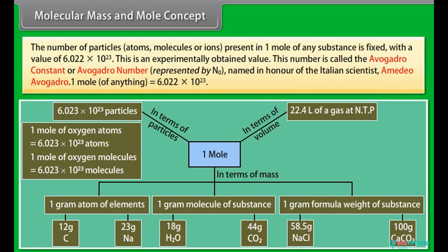The number of particles, atoms, molecules, or ions present in 1 mole of any substance is fixed with a value of 6.022 into 10 raised to the power 23. This is an experimentally obtained value. This number is called Avogadro constant or Avogadro number, represented by N0, named in honor of the Italian scientist Amedeo Avogadro. 1 mole of anything is equal to 6.022 into 10 raised to the power 23.